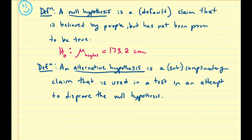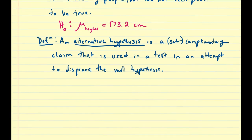So somebody comes up to you and says, 'I believe that the mean of the heights of all the people in this room is 173.2 centimeters.' And you turn around and say, 'I don't quite believe you. I might think the mean is something else.' Or you could say that the mean is bigger than 173.2, or you could say the mean is 180 cm — something more specific. Those would be examples of alternative hypotheses.